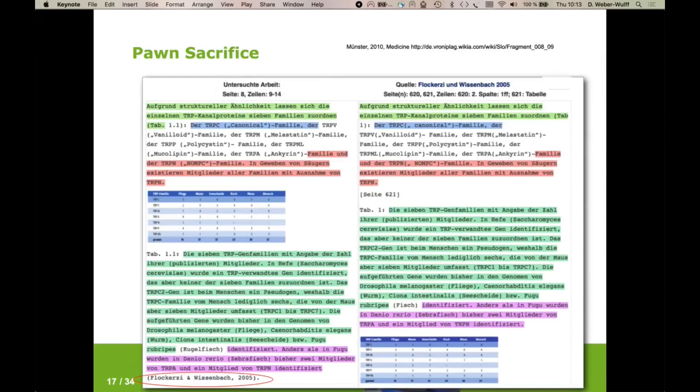There's a type of plagiarism that has been called pawn sacrifice by a researcher in Germany. And I had not believed that this kind of plagiarism was actually available or used, but it is very, very often, especially in law dissertations, but also in others. And this is the author actually gives the source, but doesn't make it clear that they're taking the text identical word for word. And they're not making it clear where does it begin and where does it end.